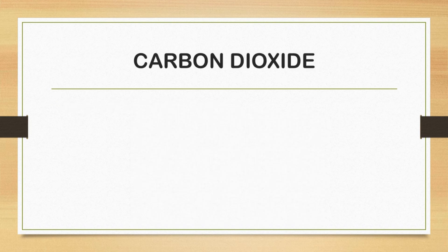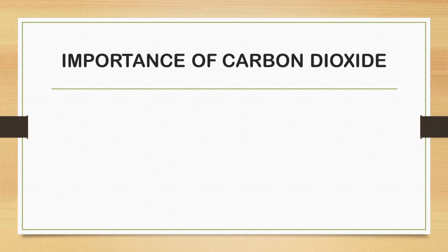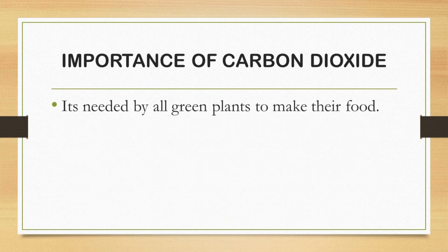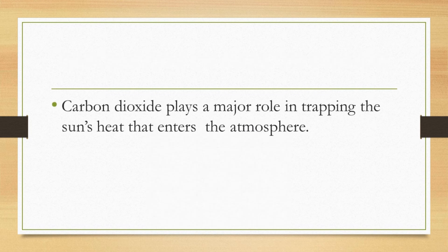Next, we are going to talk about carbon dioxide. Air contains 1% of carbon dioxide. Even though there is only a small percentage of carbon dioxide in the air, it has an important role in our life. It is needed by all green plants to make their food through the process of photosynthesis. And carbon dioxide plays a major role in trapping the sun's heat that enters the atmosphere.